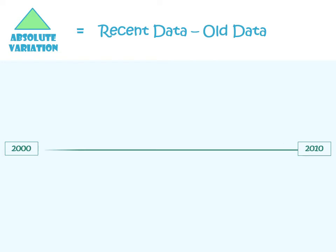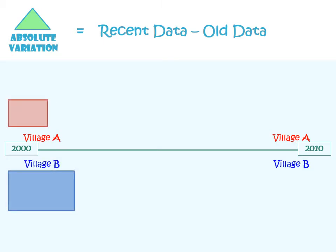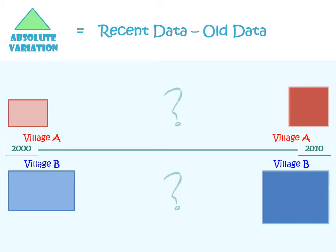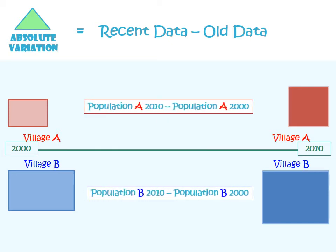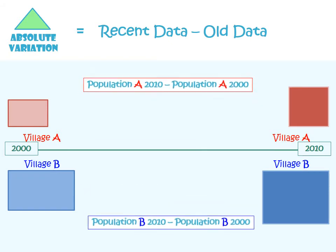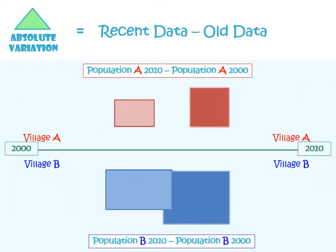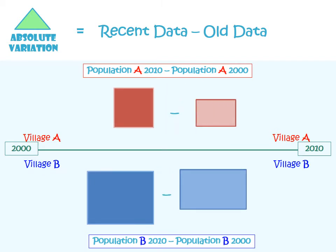Let's look at an example in order to gain a better understanding. We will consider two villages, A and B, with their corresponding inhabitants in the year 2000 and in the year 2010. Which has grown the most during all this time? In order to answer this question, we apply the formula and locate the variations that tell us by how much A has grown, and the same for B.